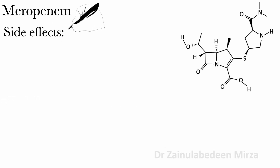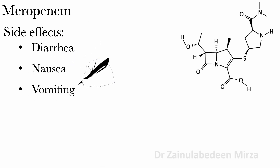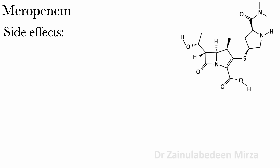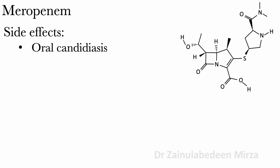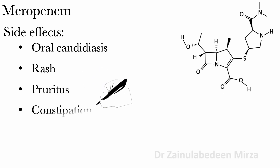Side effects of Meropenem include diarrhea, nausea, vomiting, headache, inflammation at injection sites, oral candidiasis, rash, rhinitis, constipation, and glossitis.